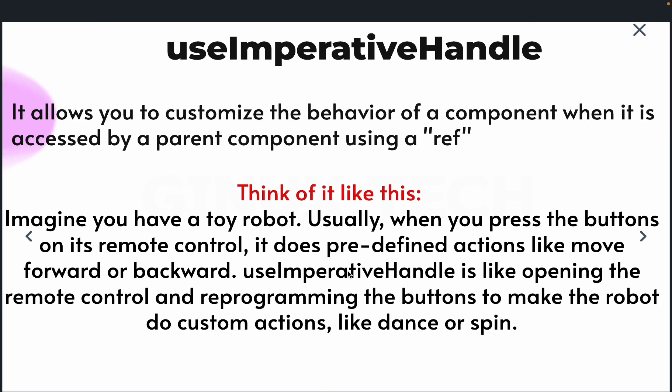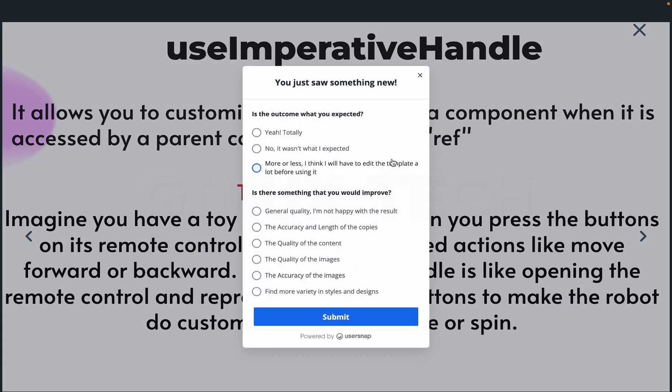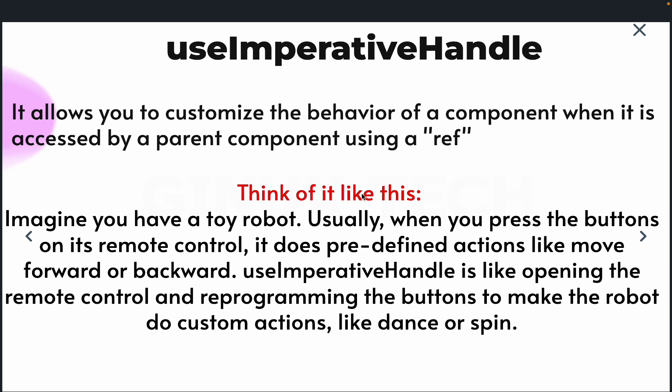Without any further ado, let's get started. The first one I'm going to be sharing is useImperativeHandle. The method I'm going to use for this tutorial is to explain the theory first, and then show you how you can use these hooks in your code — the practical aspect, how you can implement them in your project. So first I'll explain it, and then we'll go to where we can use it.